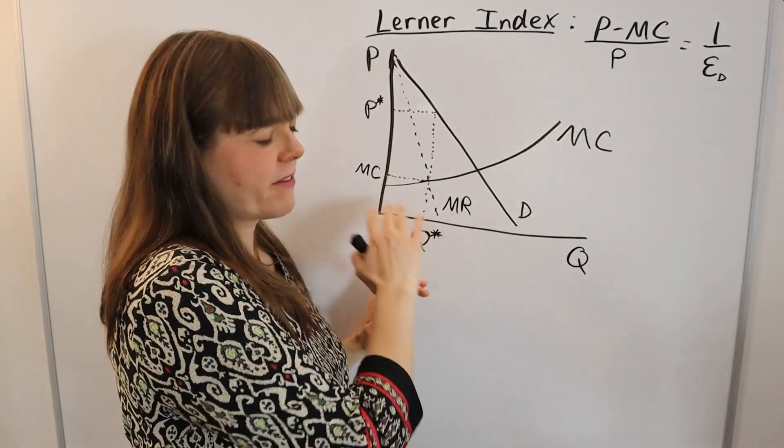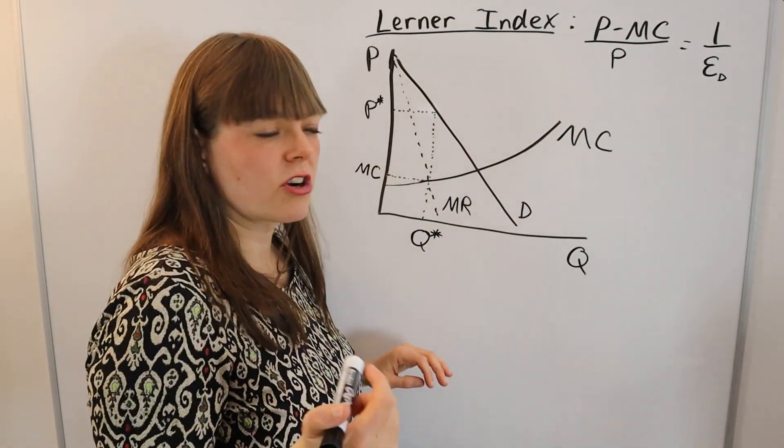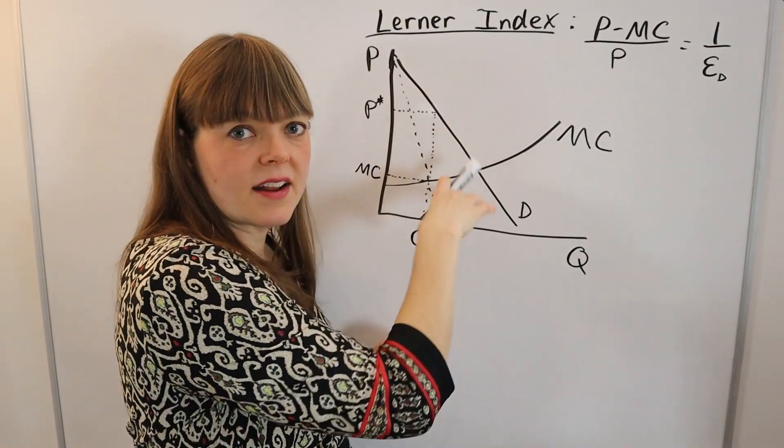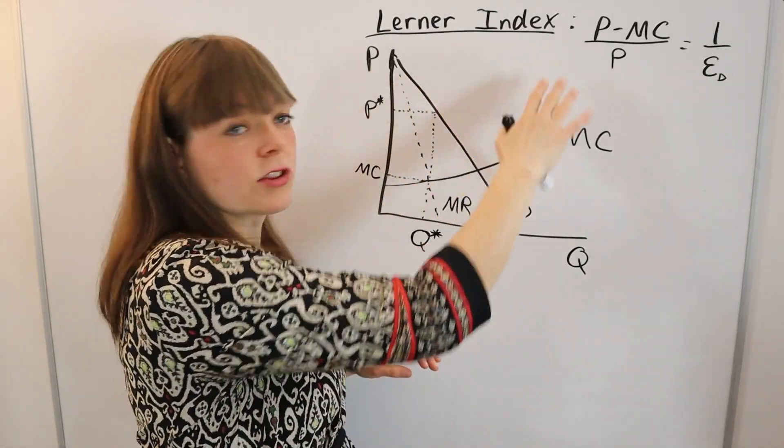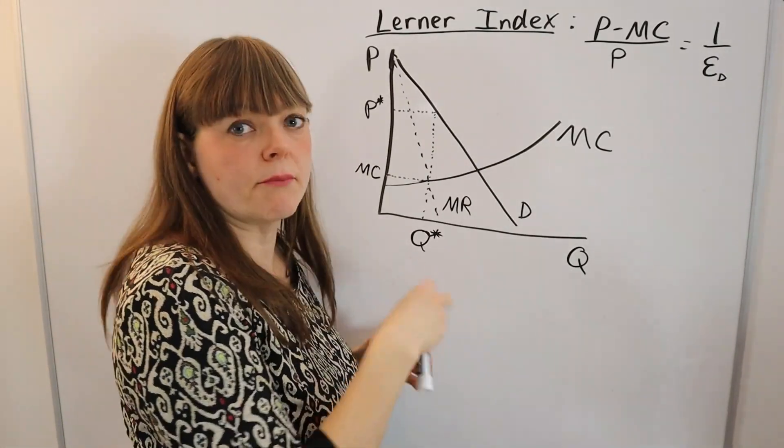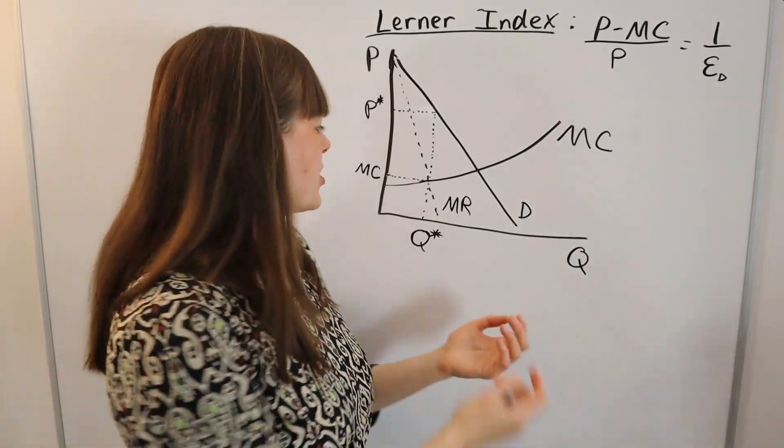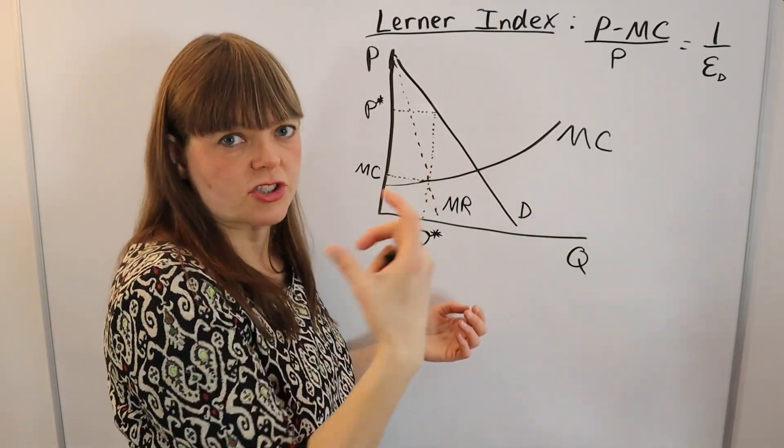Because fixed costs are not built into the marginal cost structure, you don't know if this is bad. You don't know if the firm is cheating you just because you have a high Lerner Index. All you know is that most of the money you're paying is going towards something that is not the marginal cost.